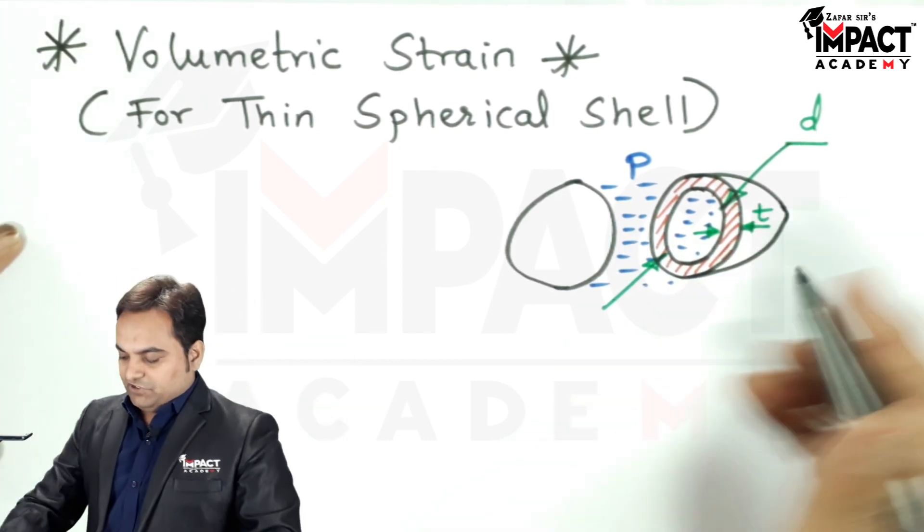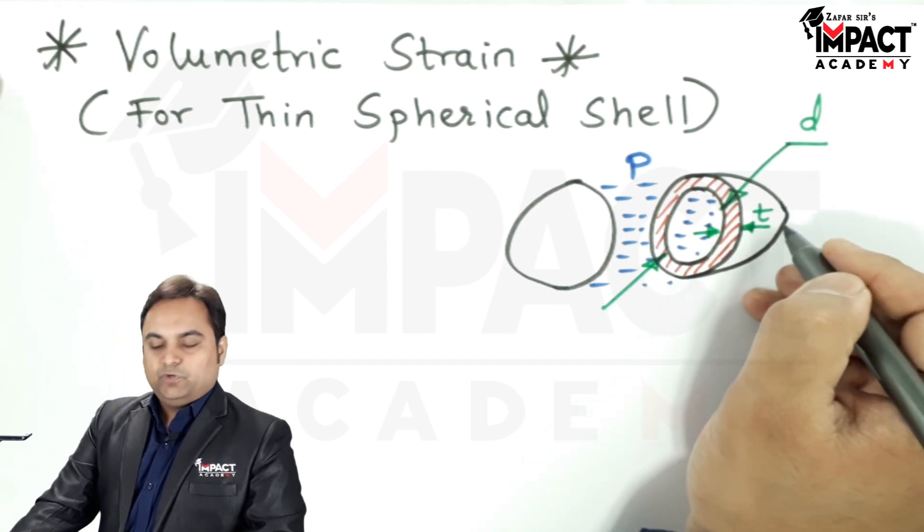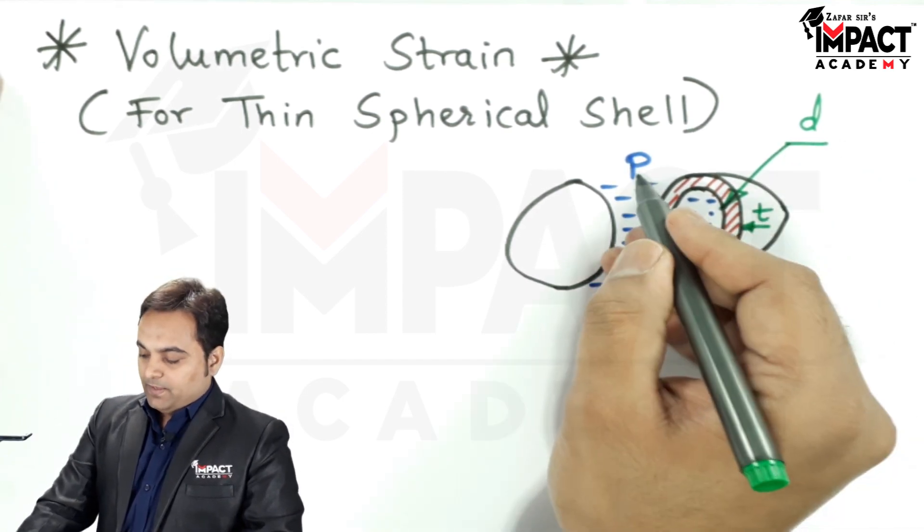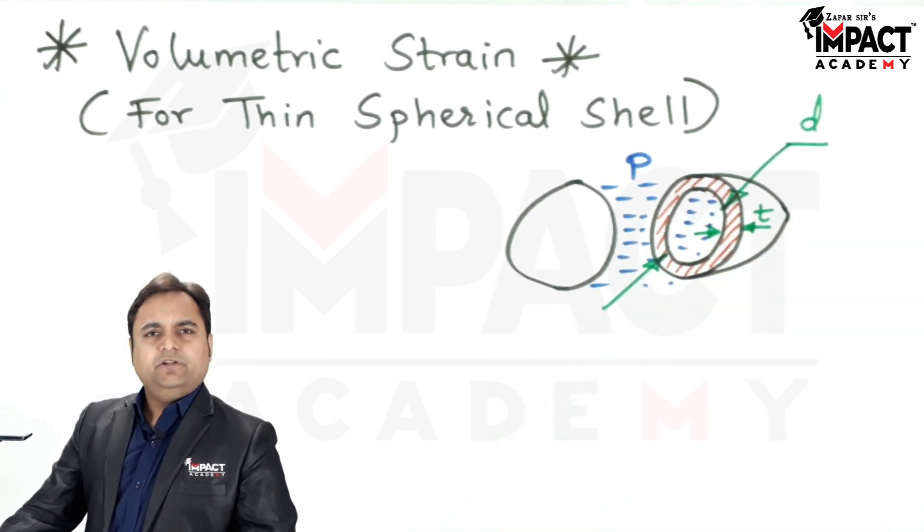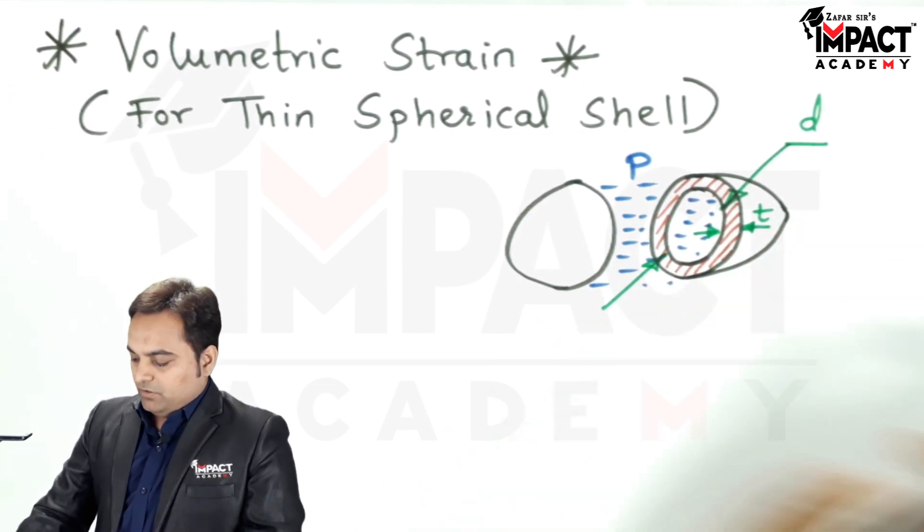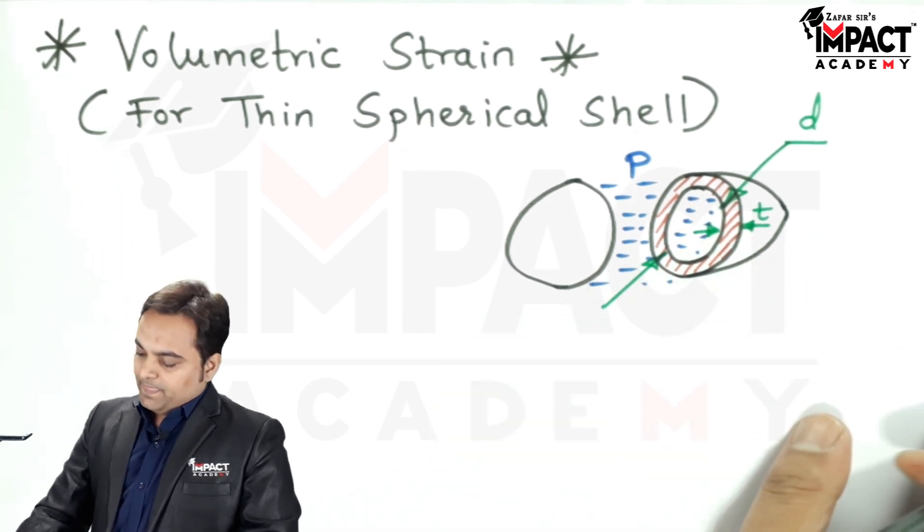So, here is a thin spherical shell with internal diameter small d. The thickness of the shell is small t, both are in terms of mm. P is the internal pressure of the liquid or the fluid, it can be gas, vapour, anything which we are storing in this thin spherical vessel.